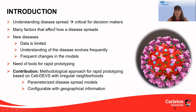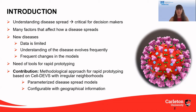Understanding the spread of a disease is critical for decision makers. They need to know the behavior of the disease in order to make decisions to control its spread. The decisions they make will be different if a disease is airborne or is transmitted using fomites. However, we need to take into account that there are many factors that affect how a disease is spread.